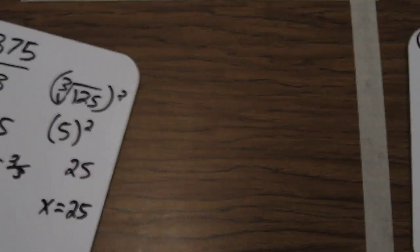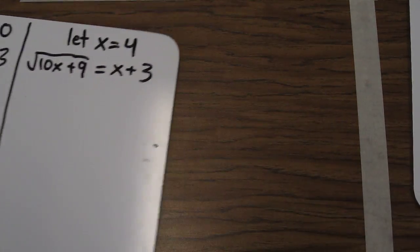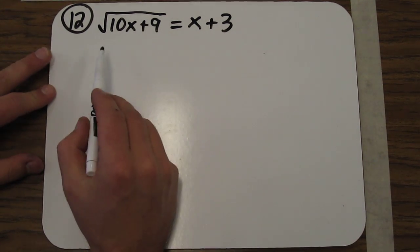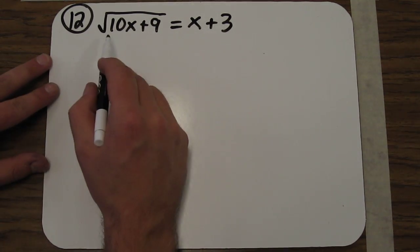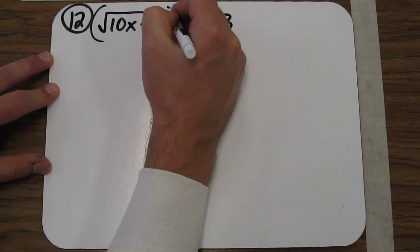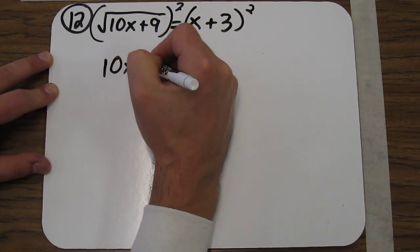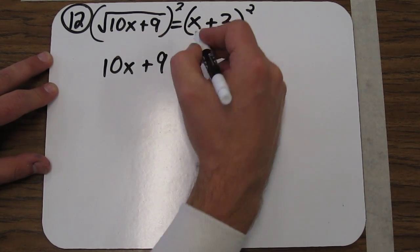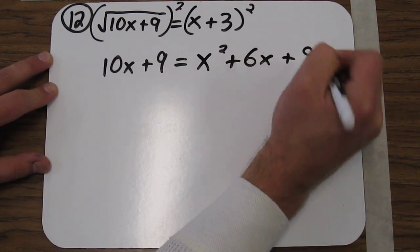All right, let's do one last problem. On this problem, we have the square root of 10x plus 9 equals x plus 3. By squaring both sides, we get rid of the square root on this side. And we have to FOIL this. x plus 3 times x plus 3 is x squared plus 6x plus 9.